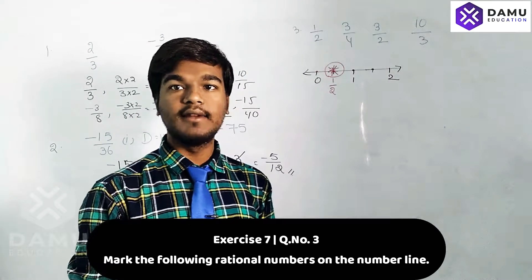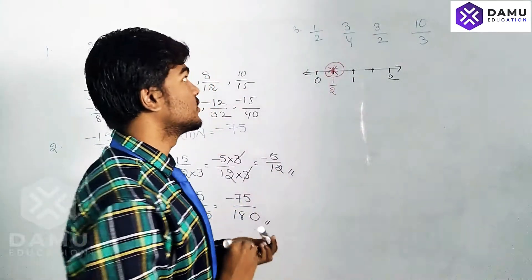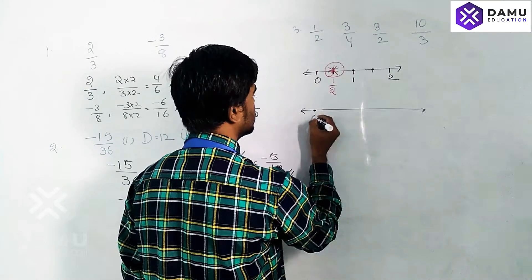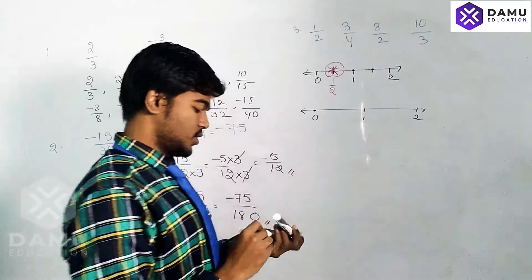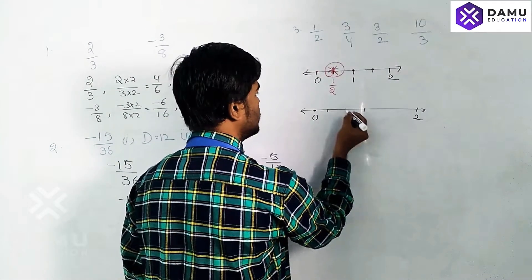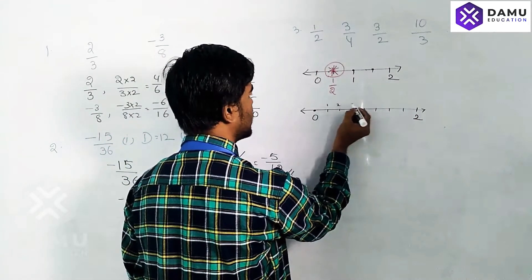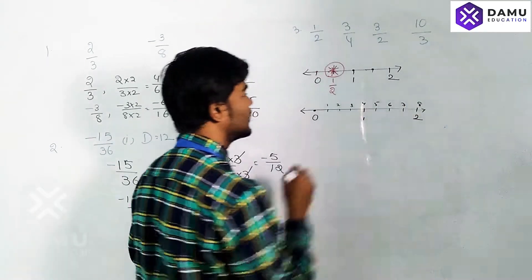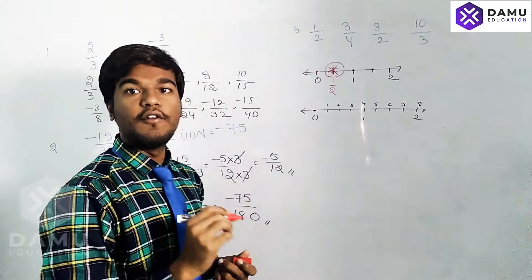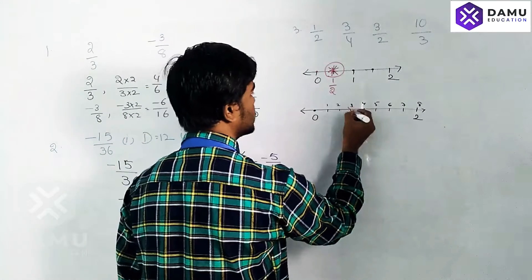For 3/4, draw 0, 1, 2 on the number line. Divide 0 to 1 into 4 equal parts: 1, 2, 3, 4. The denominator is 4 so we have 4 divisions from 0 to 1. The numerator is 3, so we count 3 parts and mark that point. That is 3/4.